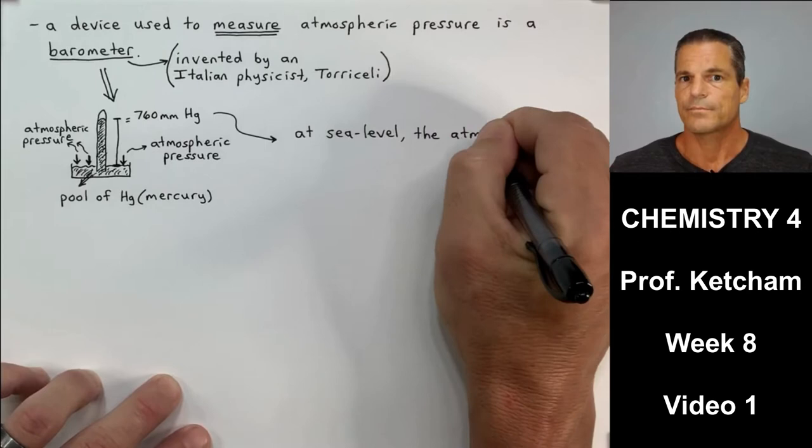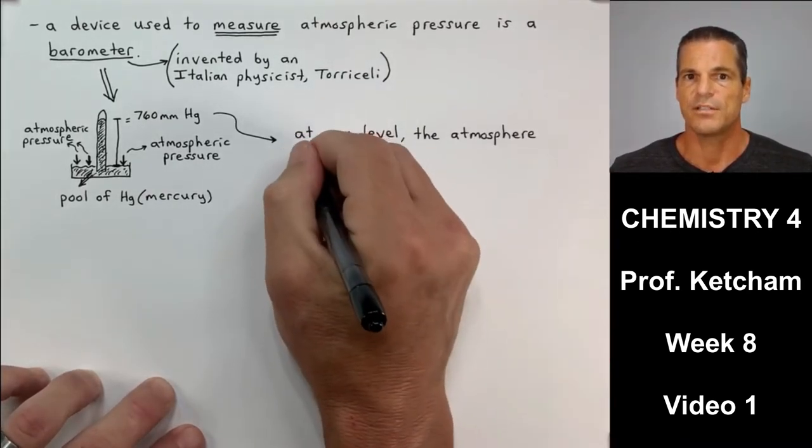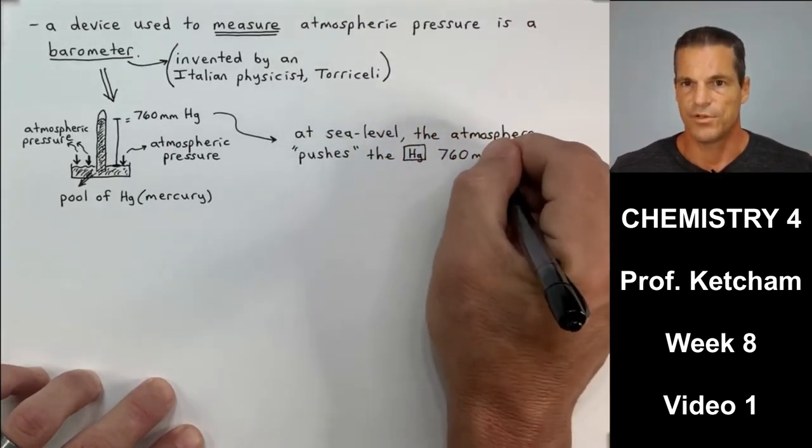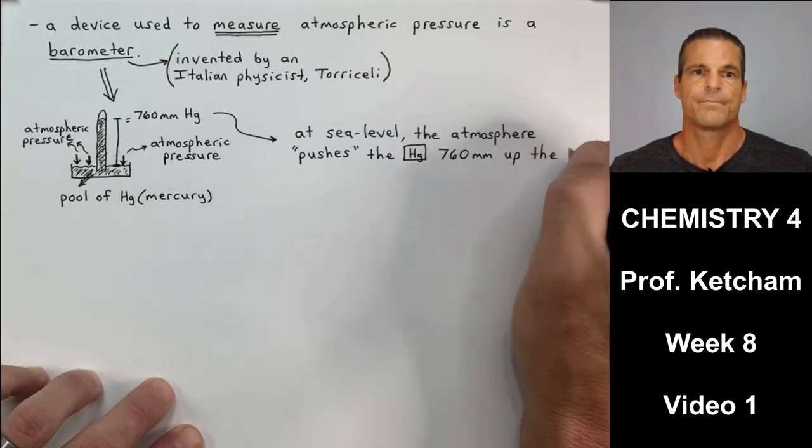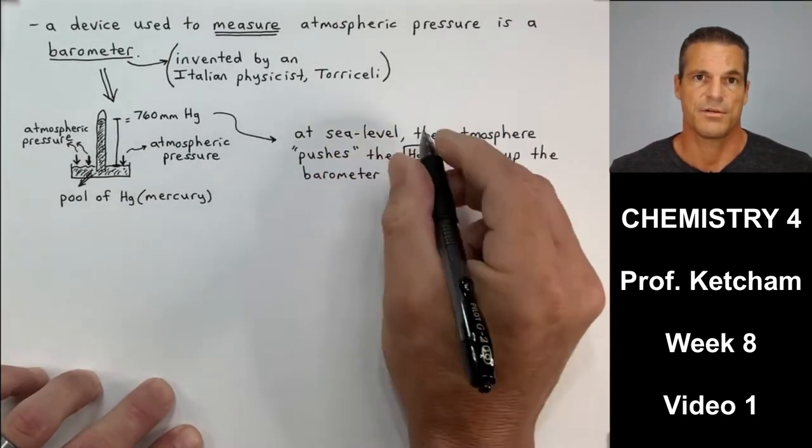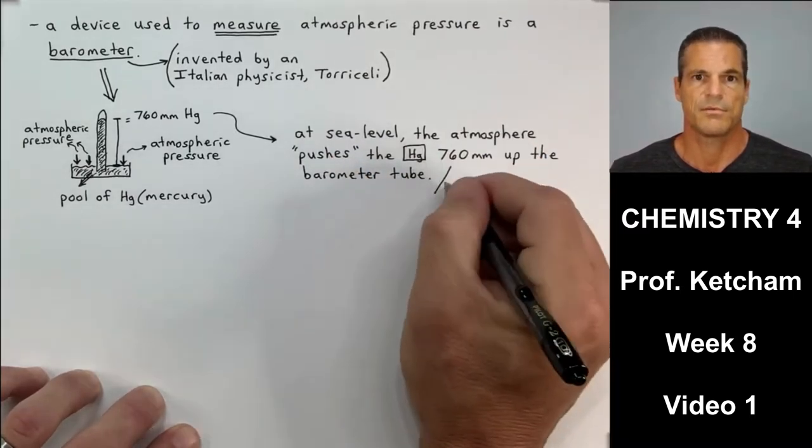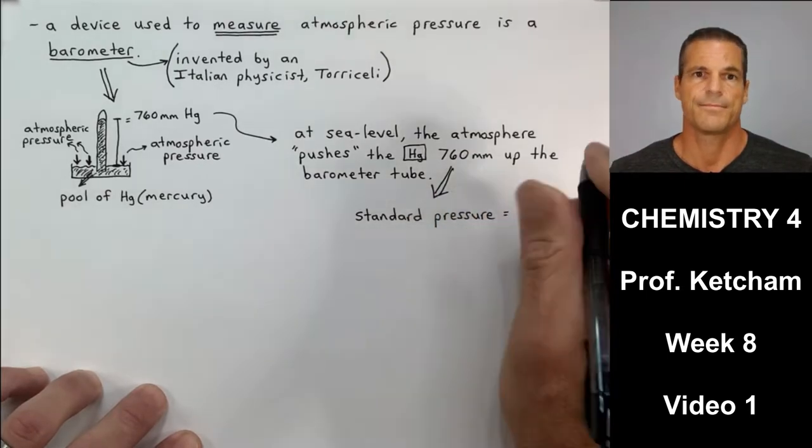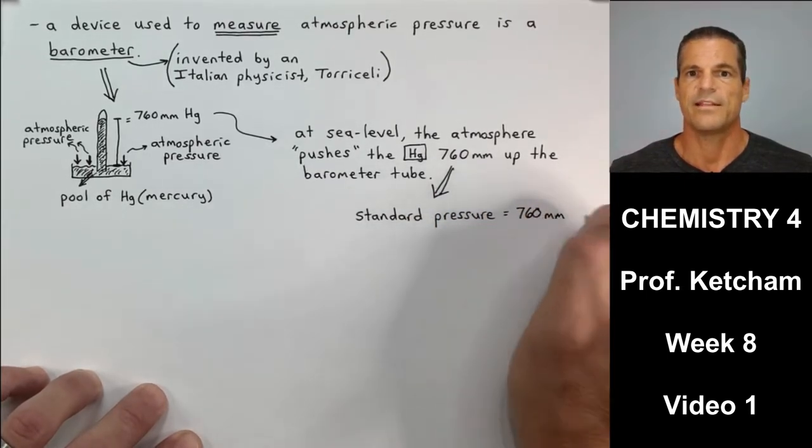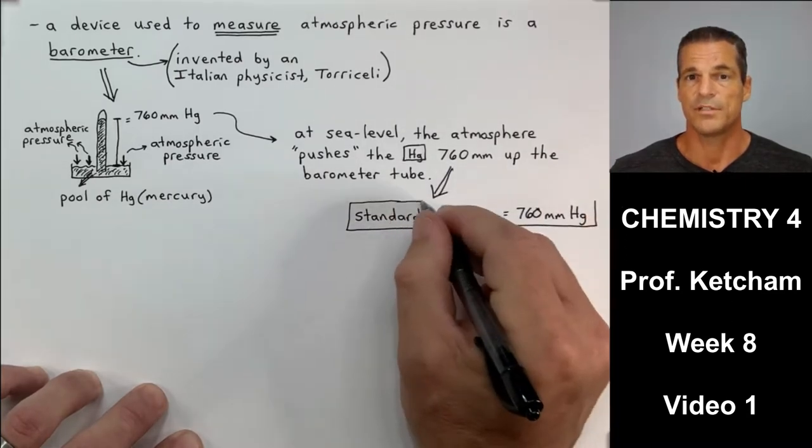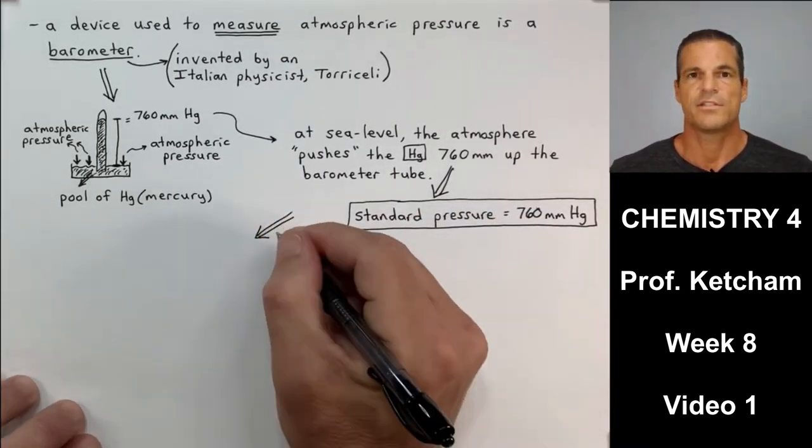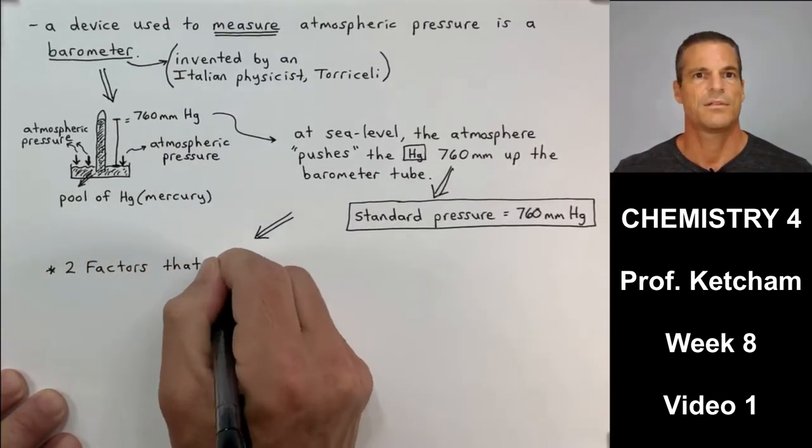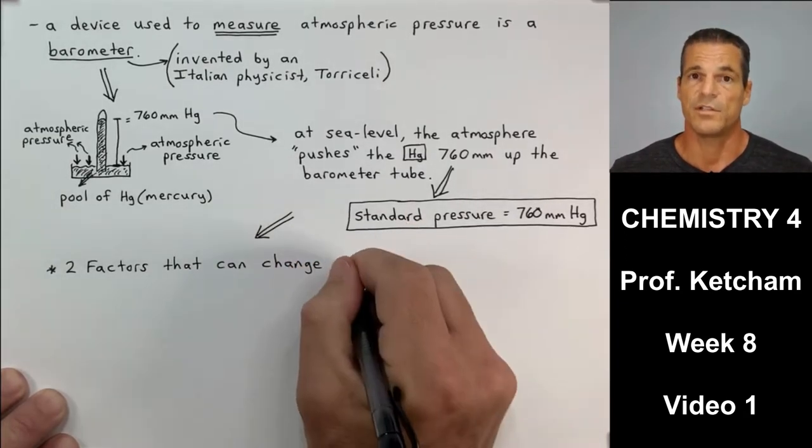So, at sea level, the atmosphere pushes the mercury 760 millimeters up the tube. We call that standard pressure. Standard pressure is 760 millimeters mercury. Now, that MMHg is one particular unit for pressure. Units of distance, for example - inches, meters, kilometers, furlongs, centimeters - you get the idea. We have different units for pressure as well.